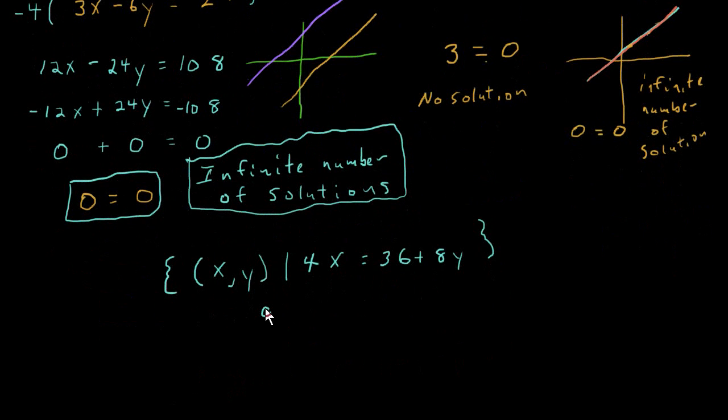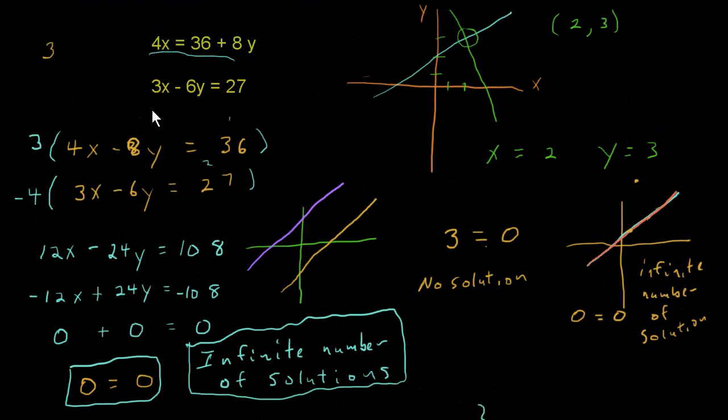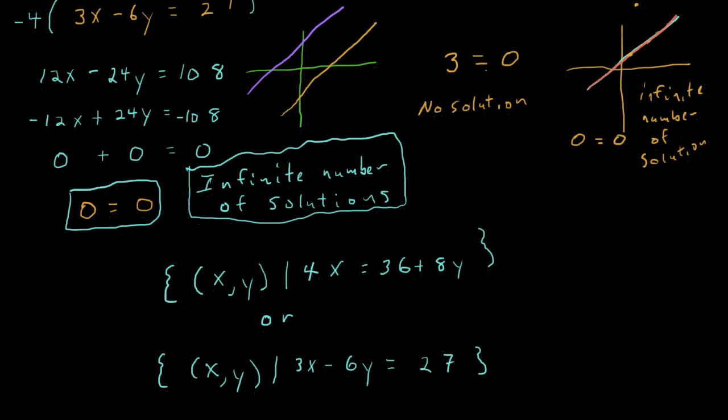Another way, and there's even more than these two ways that we're going to write down. Another way is to write that ordered pair again, x, y, and then such that sign in there, that vertical bar. And then I'm just going to write down the other equation instead of the first one. It doesn't matter which equation you write down. And these are two ways to show your answer.